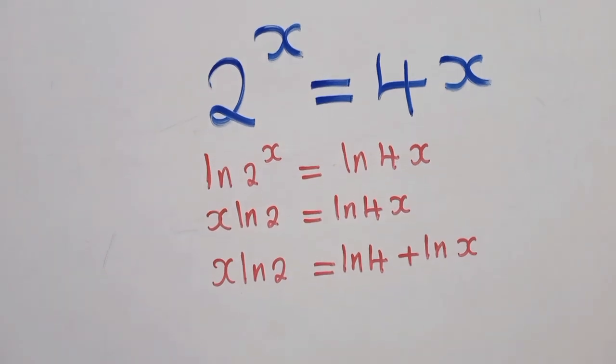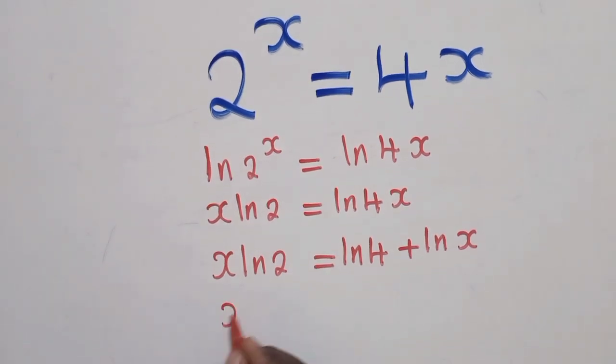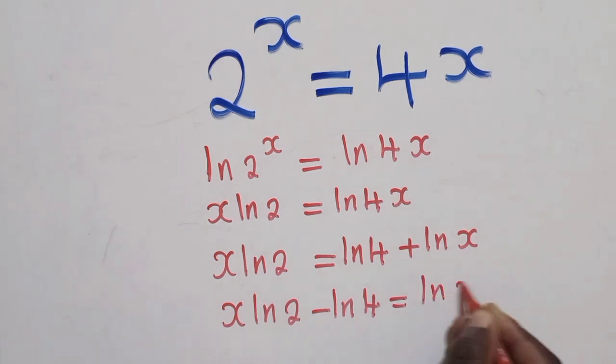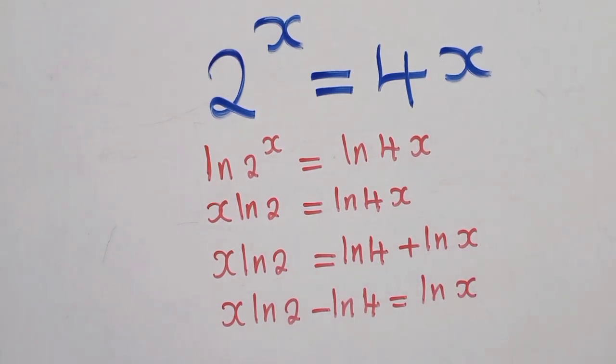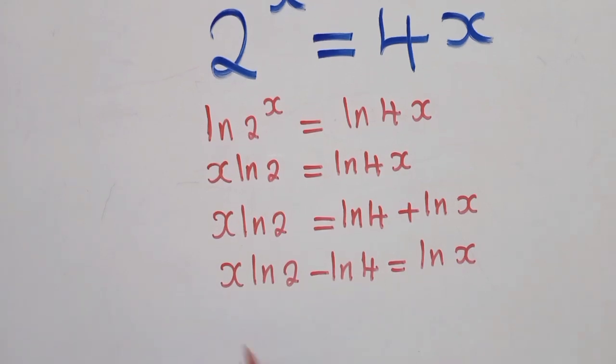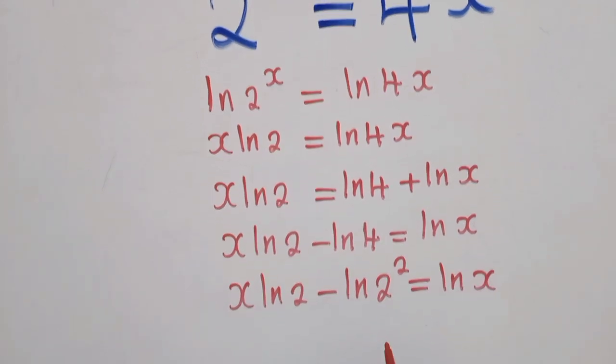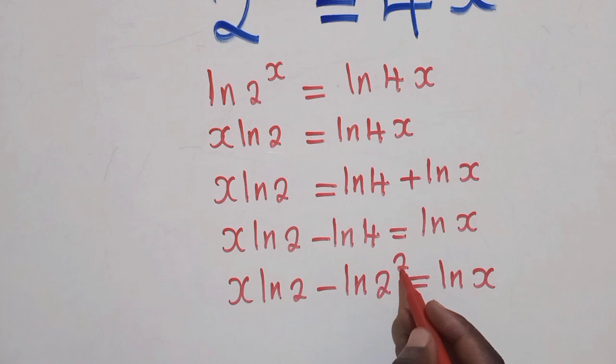Okay, so now from here we shall write x ln of 2 minus ln of 4 is equal to ln of x. All right. So here we maintain x ln of 2 minus ln of 2 power 2. We want to have similar bases here, 2 and 2, which is equal to ln of x. And what did we say ln does when you've got a power?